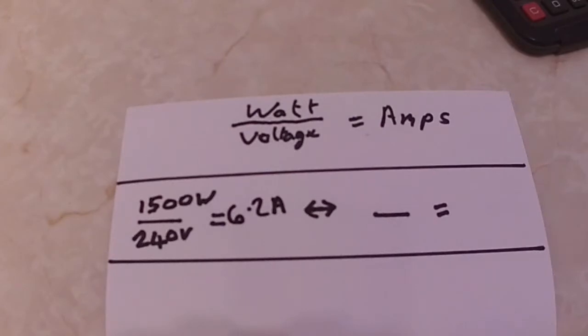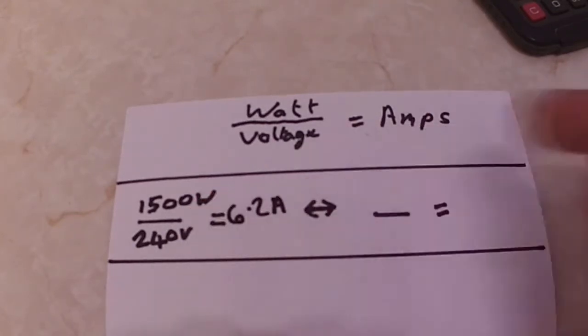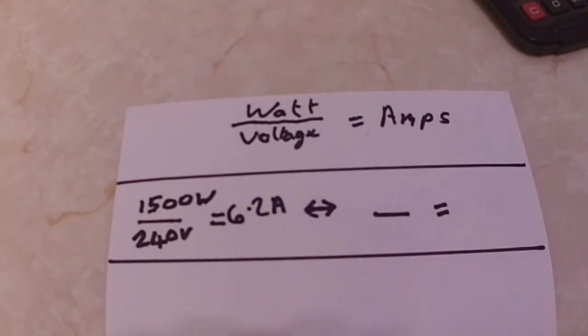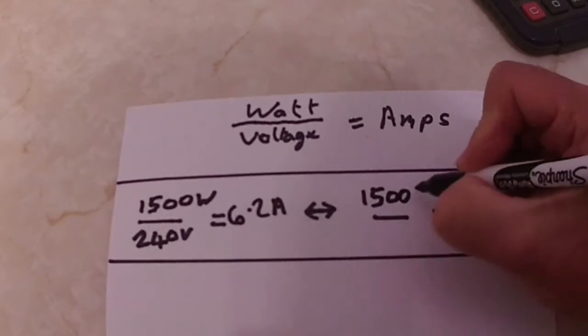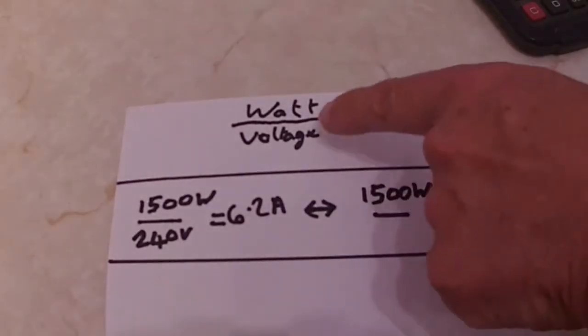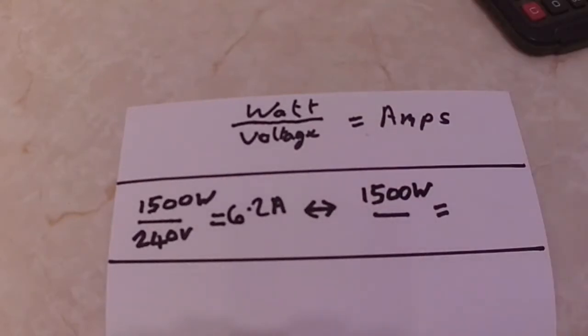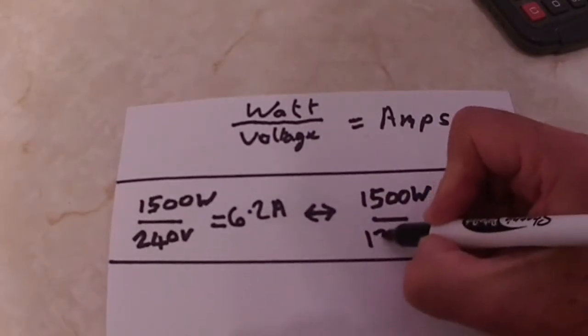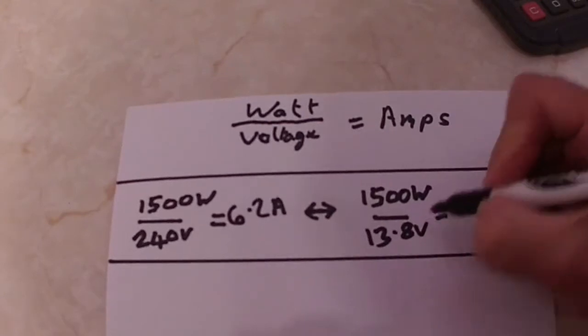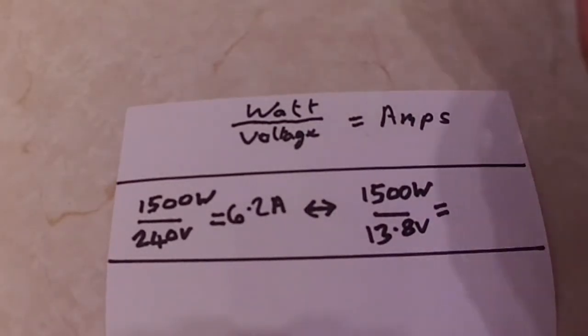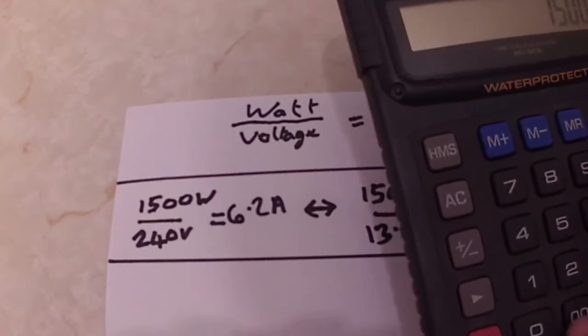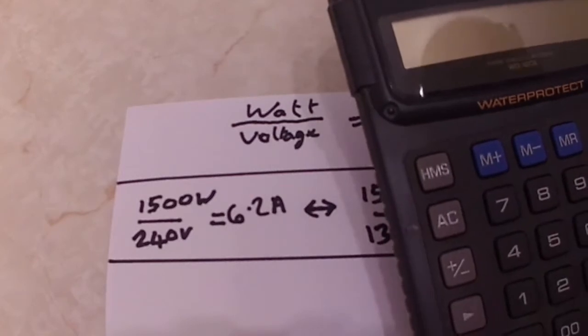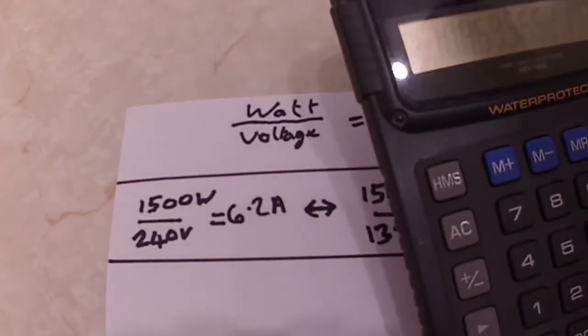That's just one appliance. Okay, you want to run that in your motorhome. Assuming your inverter is 100 percent efficient you can apply the same again. So 1500 watts now you're dividing it by your battery voltage which is 13.8 volts. Let's do that again. 1500 divided by 13.8 equals 108.6 amps.